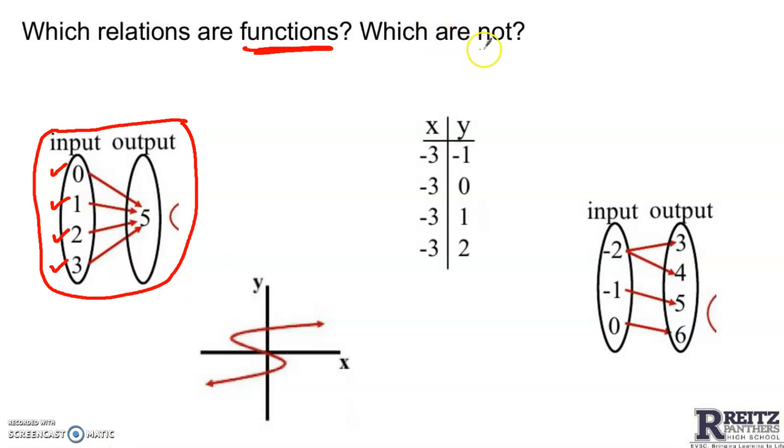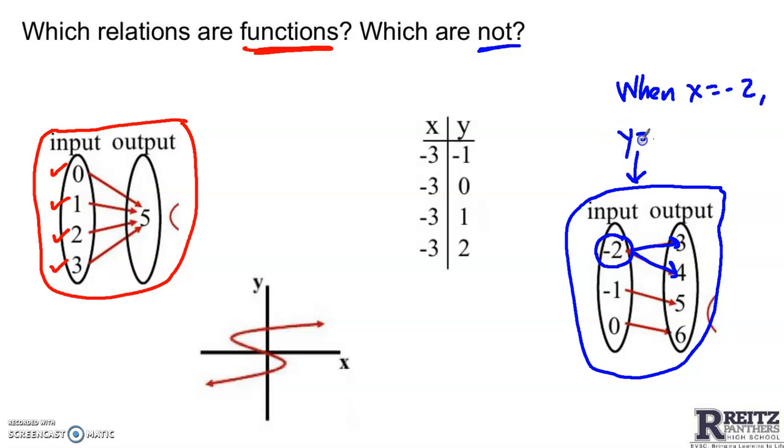By contrast, here's one that's not a function. This mapping. The issue is with negative 2. Negative 2 goes with both 3 and 4. So if I ask you to explain why this is not a function, you could say something like, well, when x is negative 2, y is 3 or y is 4.